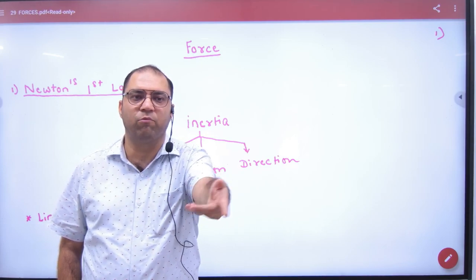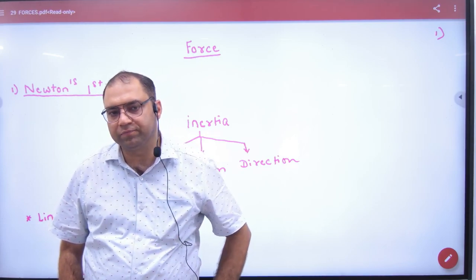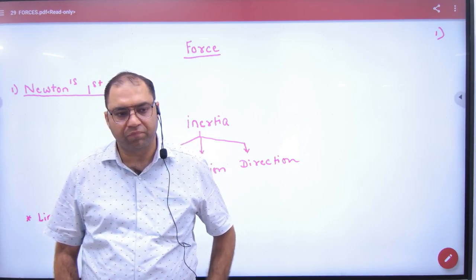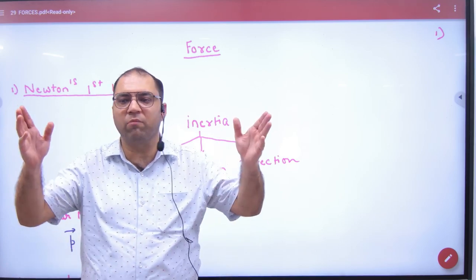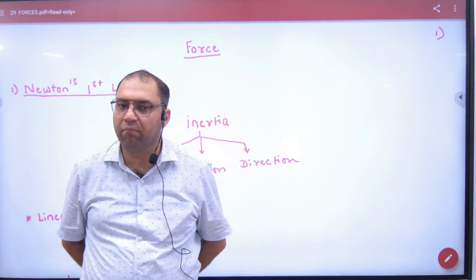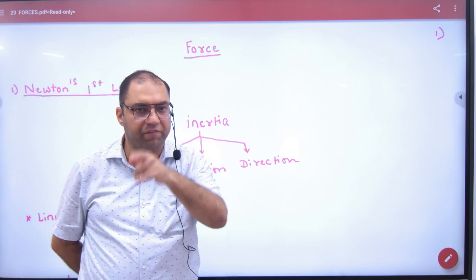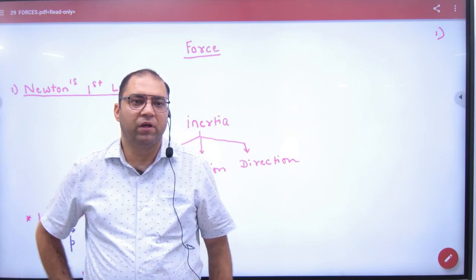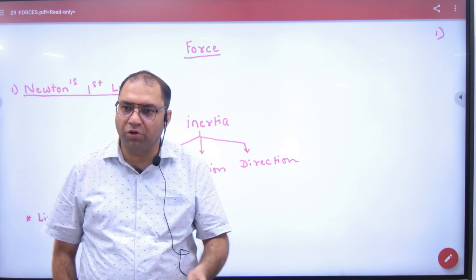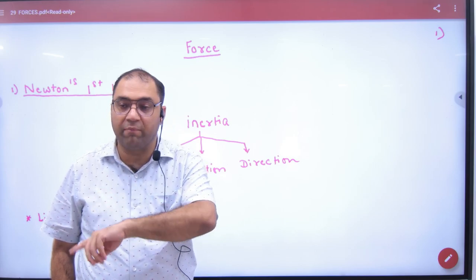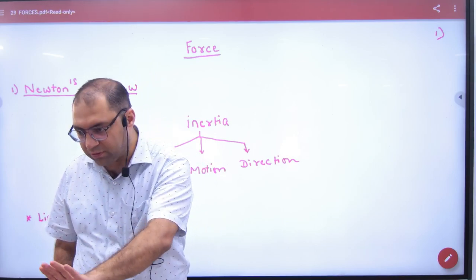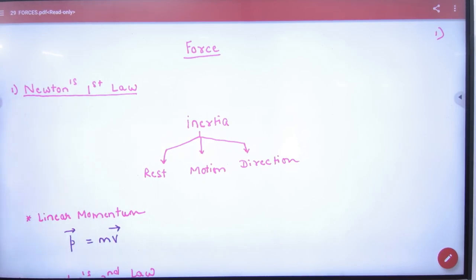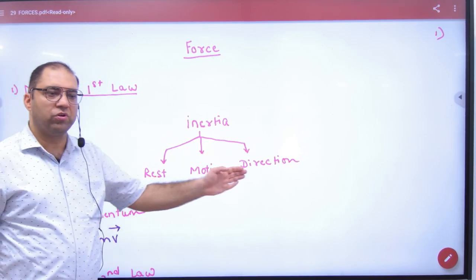What is the measure of inertia? The measure of inertia is mass. Mass is the measure of inertia. If the mass of the body is more, it is also more difficult to move it, and more difficult to stop it. There are three types of inertia: rest, motion, and direction.